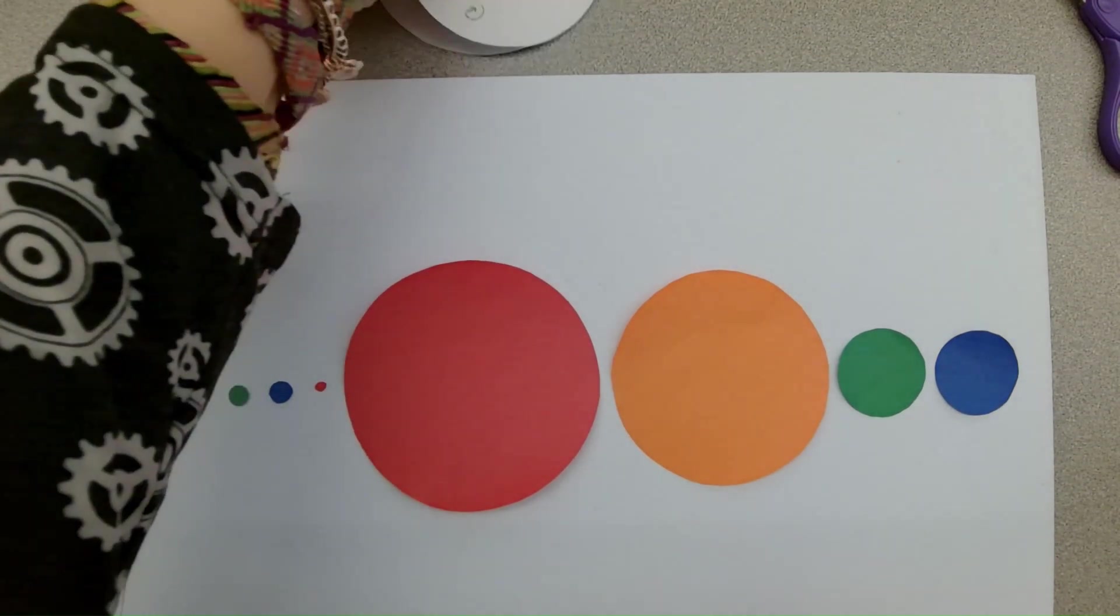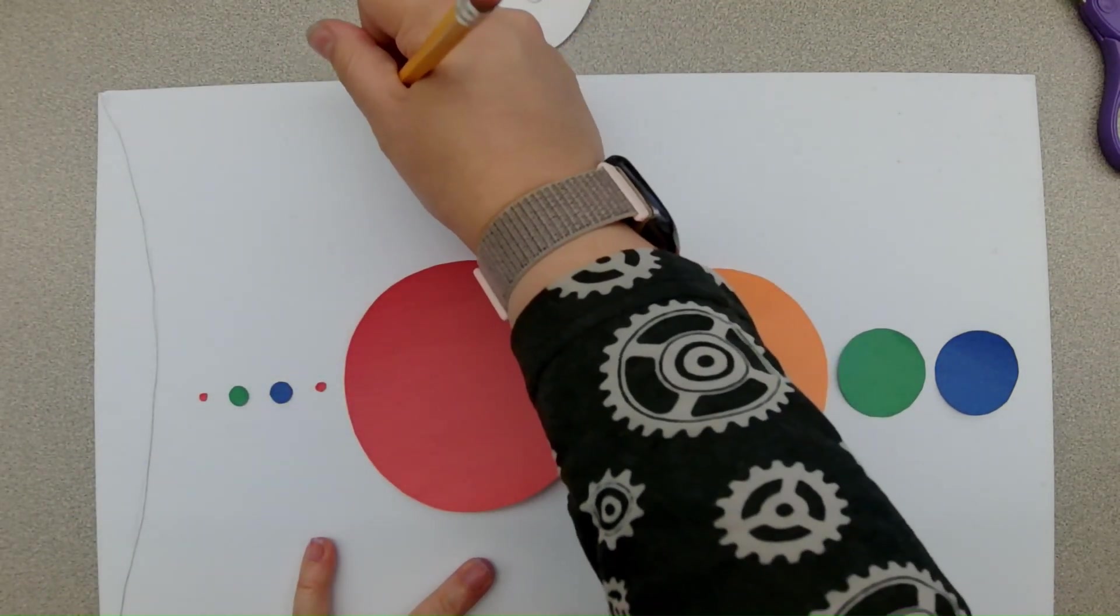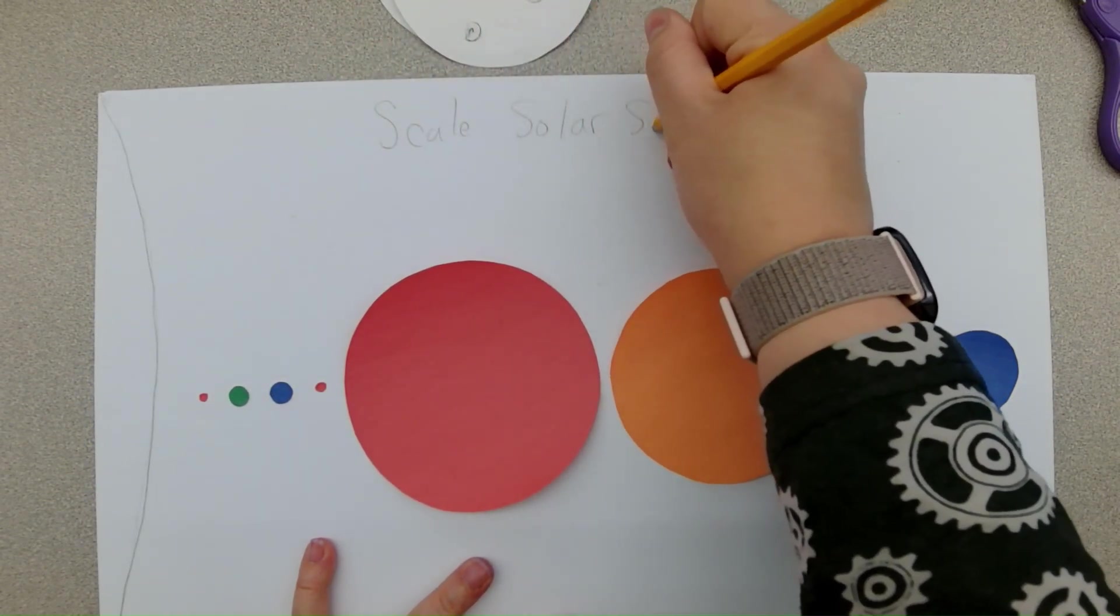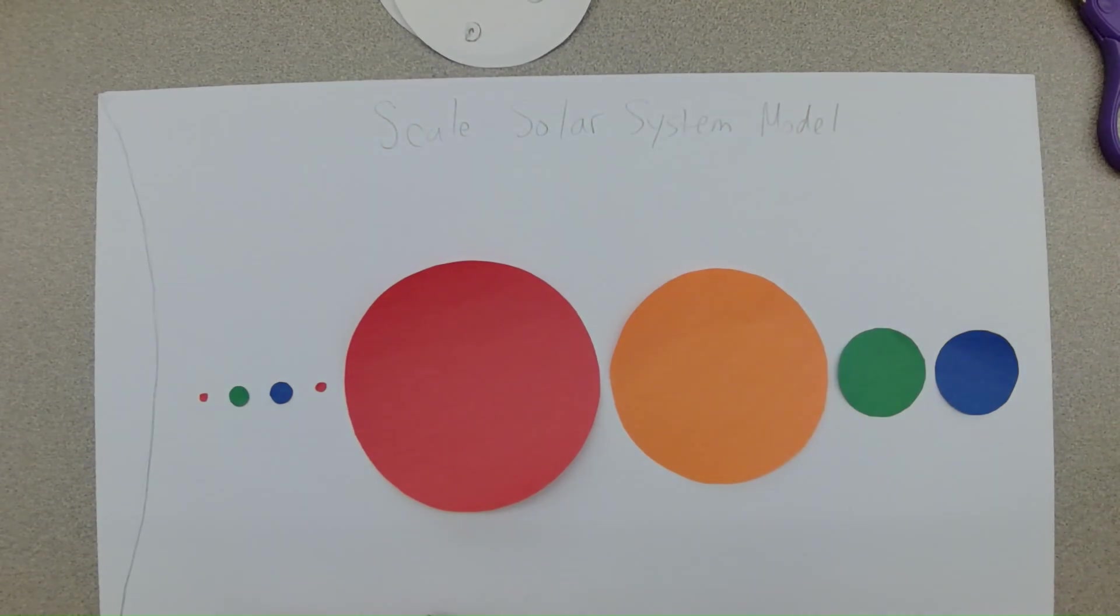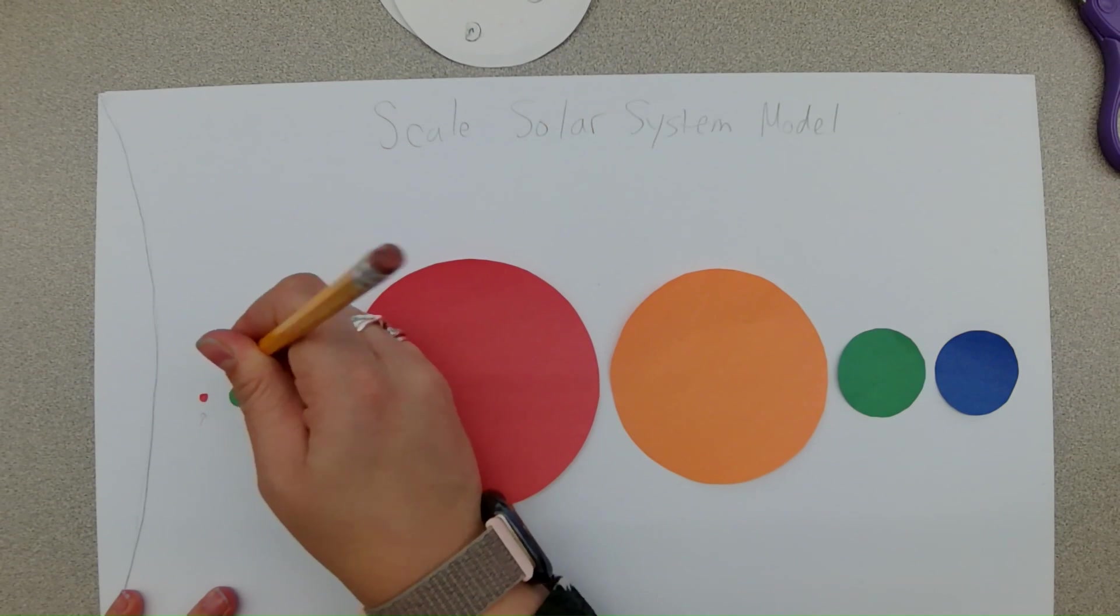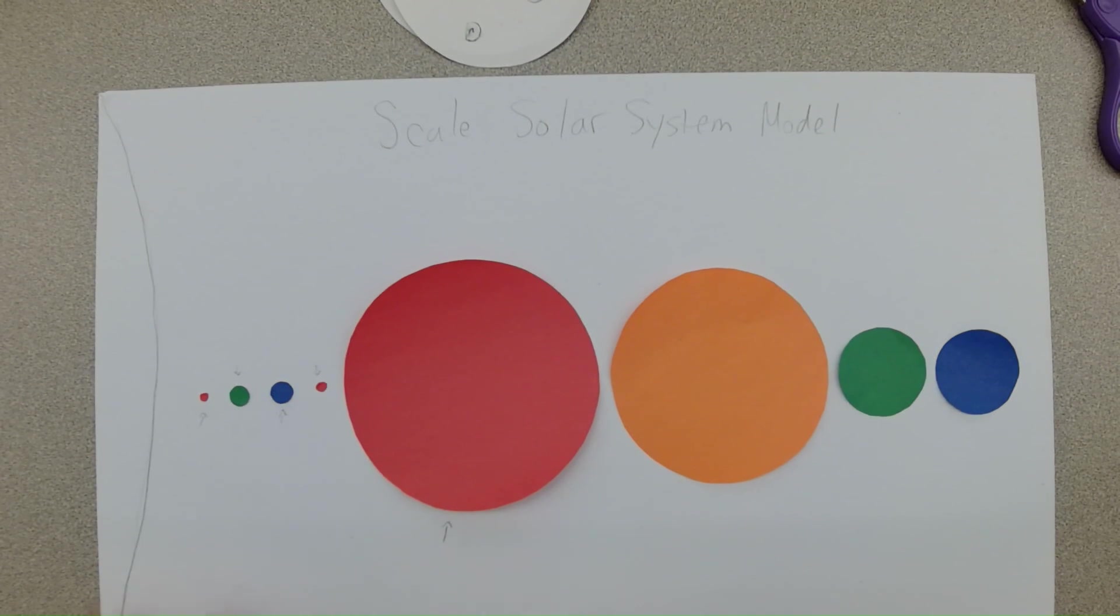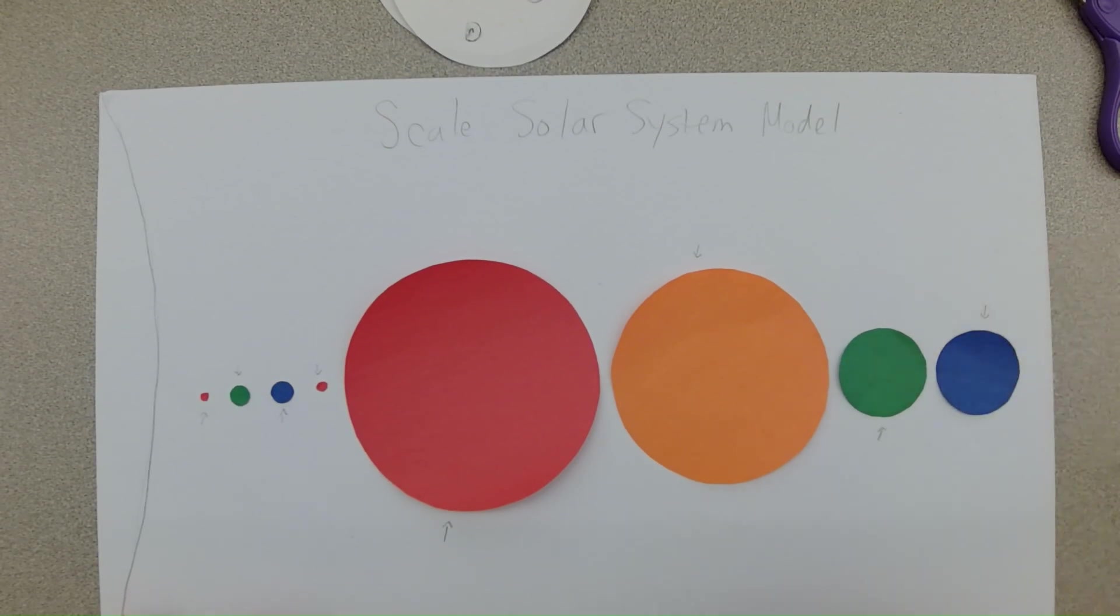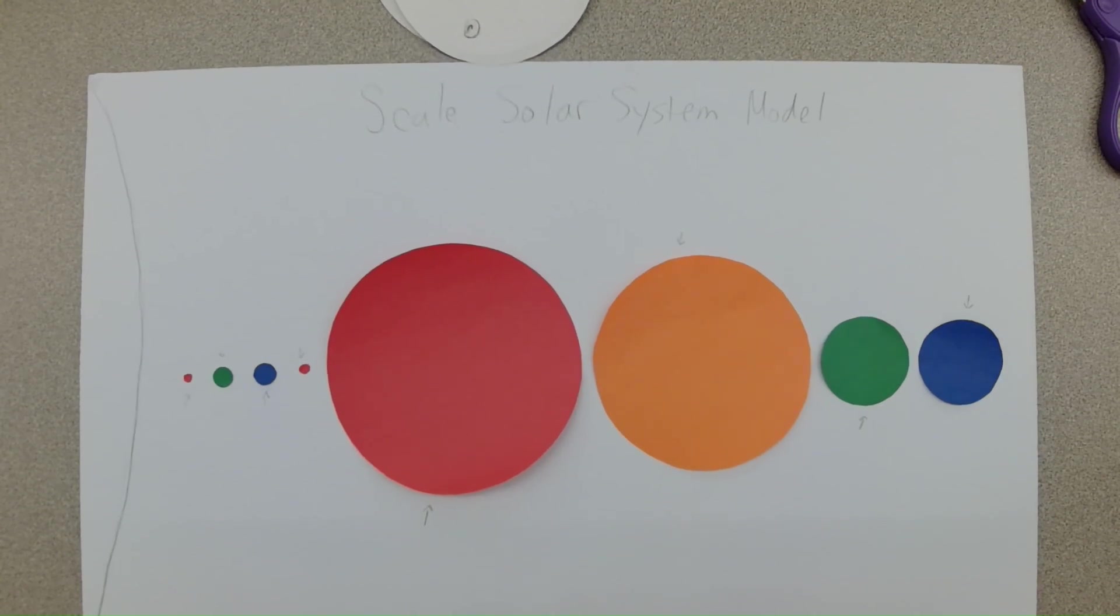And since we put, we had our papers cut out and glued to the back, we definitely have them in the right order. So we can write scale solar system, scale solar system model, scale solar system model. And then you can also go in and label each of your planets. And that's how you're going to make your own scale version of the solar system.